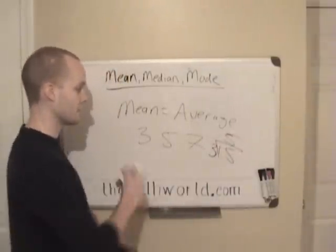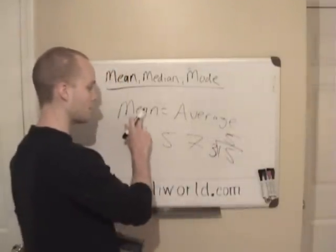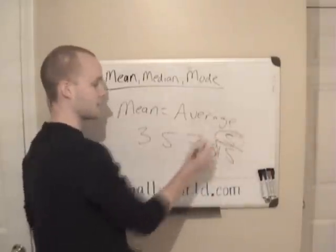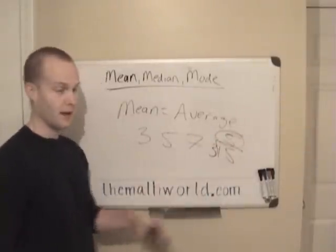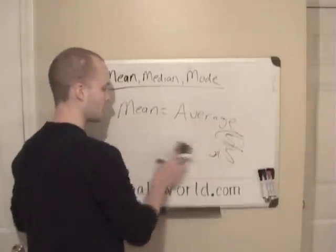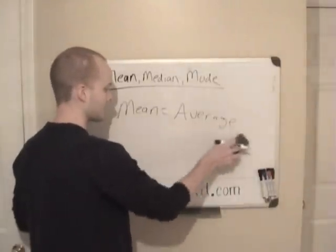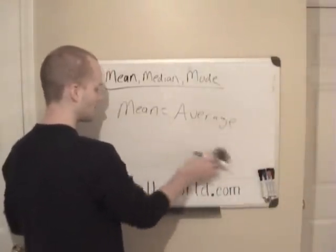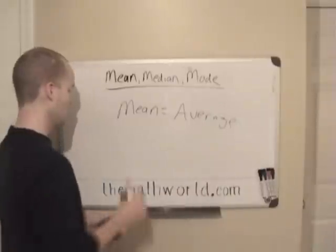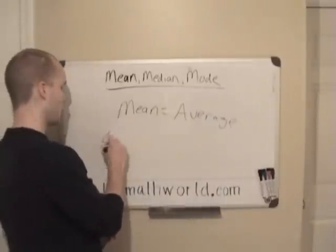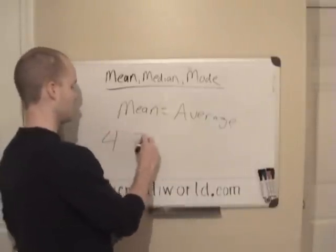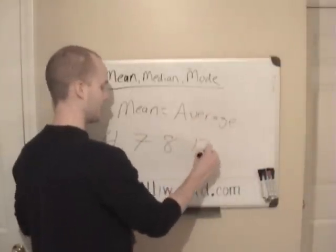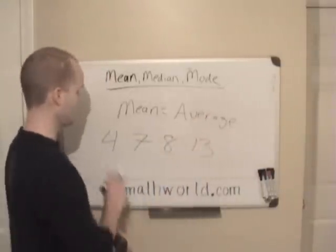So 15 divided by 3, and 3 goes into 15 five times. So the average or the mean of 3, 5, and 7 is 5. So we're going to take a look at another example here. Let's try 4, 7, 8, and 13.